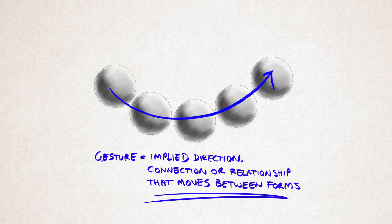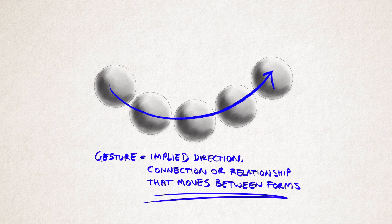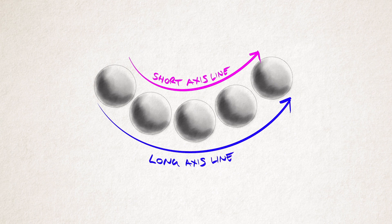That gives us a starting point but we can take things one step further. What we'll notice with these spheres is that together, they imply a long curved axis line.